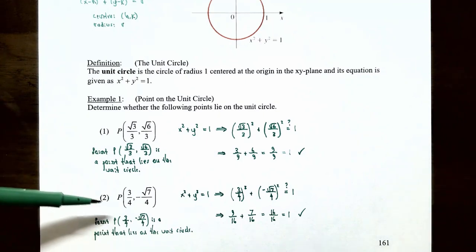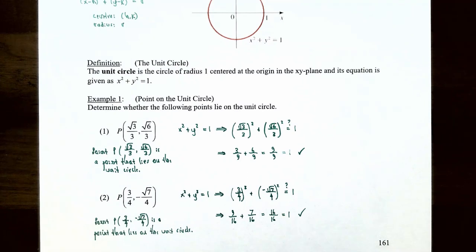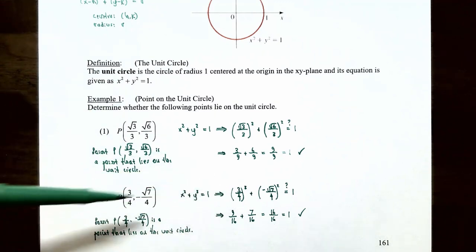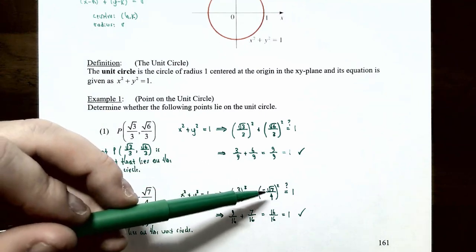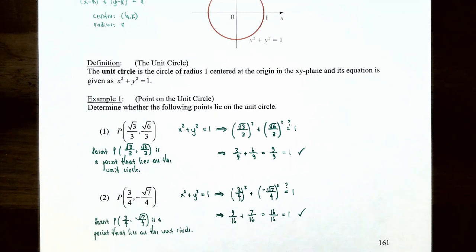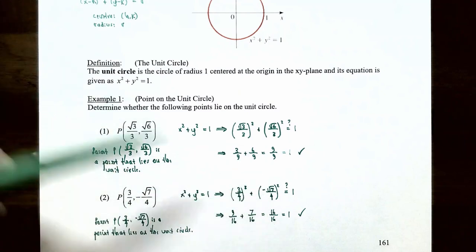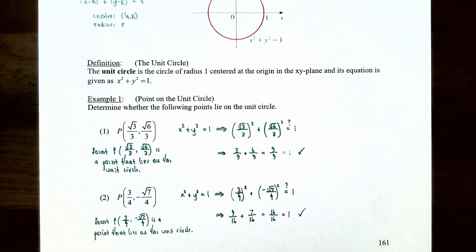For the second point (3/4, −√7/4): (3/4)² + (−√7/4)² = 9/16 + 7/16 = 16/16 = 1. Note that the negative sign is inside the parentheses with the y-coordinate, so squaring gives a positive result. This point also lies on the unit circle.